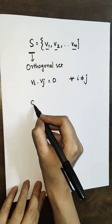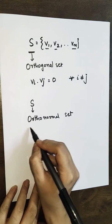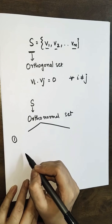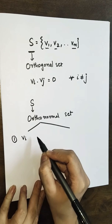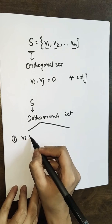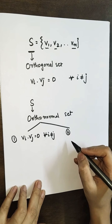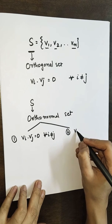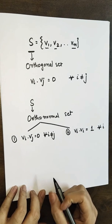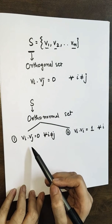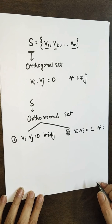Moving ahead, this set S is said to be an orthonormal set if two conditions are true. First, all the vectors are mutually orthogonal — that is, vi dot vj equals 0 for every i not equal to j. Second, all of the vectors must be unit vectors, so vi dot vi equals 1 for every i. It is evident that an orthonormal set is always an orthogonal set, but the converse may not be true — the converse holds only if all vectors are unit vectors.